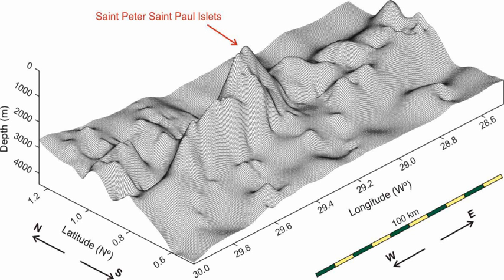An Oceanic Core Complex, or Megamullion, is a seabed geologic feature that forms a long ridge perpendicular to a mid-ocean ridge.